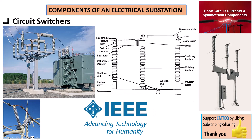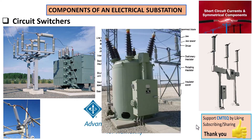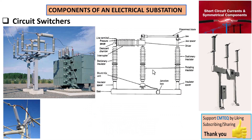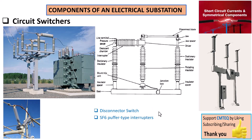You may ask why not just use a circuit breaker? This is actually where they differ: a circuit breaker can interrupt the circuit even under abnormal conditions of high fault current. When it comes to the construction of circuit switchers, it is a very simple construction as shown by the sketch here. This device employs a combination of a disconnect switch and SF6 puffer-type interrupters.